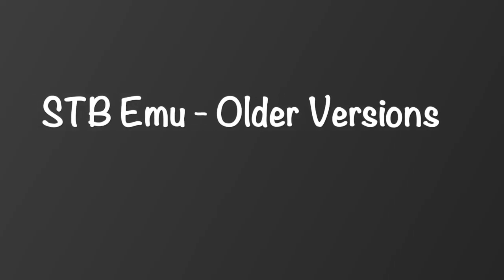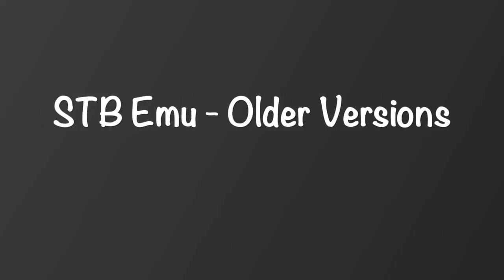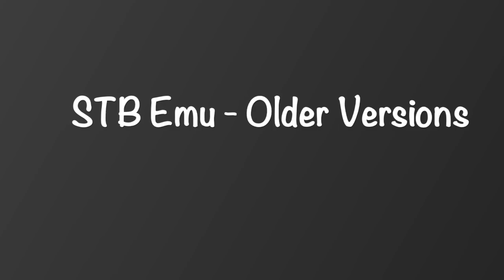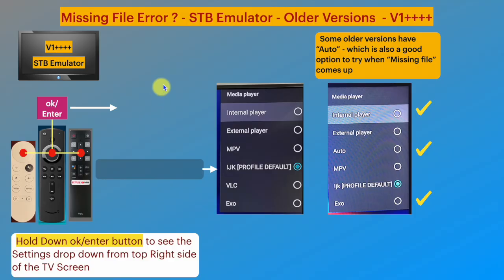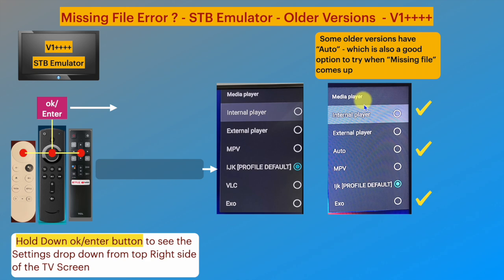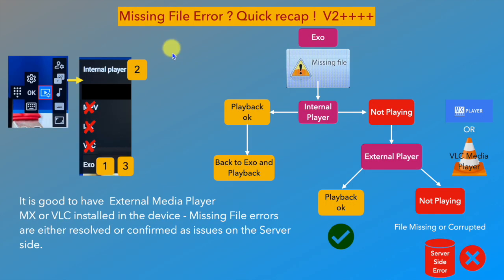A quick note on STB Emulator older versions: older versions have more media players built into the app and all of them work, which gives more options to deal with the error. External player also comes as a good choice as explained earlier.